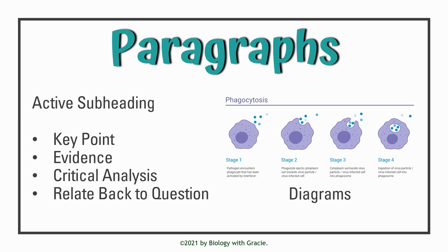For the main body — your paragraphs — it's really important to start these with an active subheading. What this means is you're not just putting, for example, 'phagocytosis' as the subheading; you're putting something like 'phagocytosis plays a role in immune control.' You're saying what it does, talking about its active process. Using an active subheading is really important because not only does it give an insight to your readers about what your paragraph is going to be about, but it can also help you when writing your essay to lead it in the direction you want so it's clear and concise.